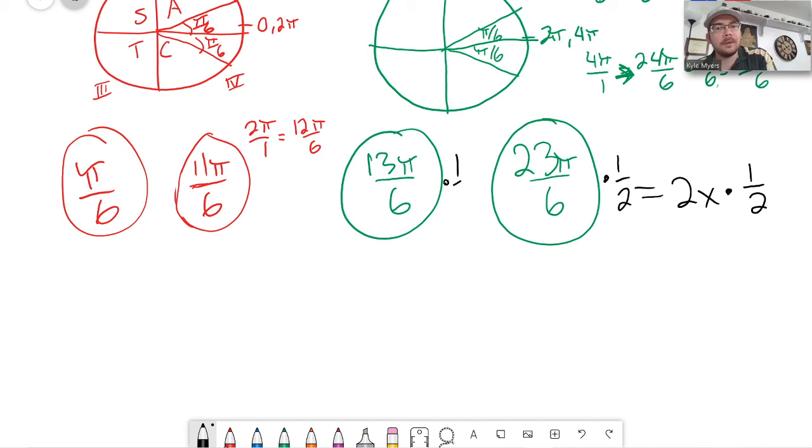Multiply by 1 half. If I multiply by 1 half, 2 times 1 half is 1. That would cancel, and now I have x by itself. This would be 23π over 12, which is less than 24π over 12, which means it's within my interval from 0 to 2π.